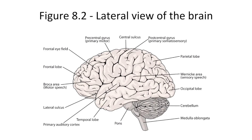This is figure 8.2, a lateral view of the brain. Broca's area is right here and Wernicke's area is right here. The arcuate fasciculus is a fibrous band between Broca's area and Wernicke's area, so we'd expect it to be right here.